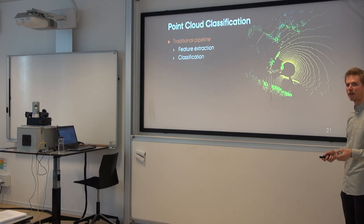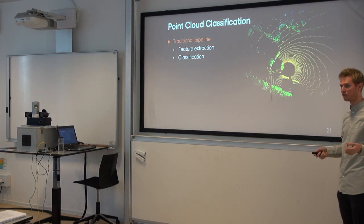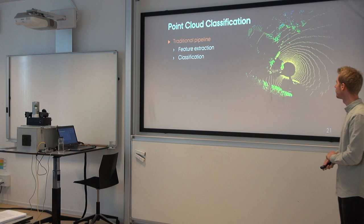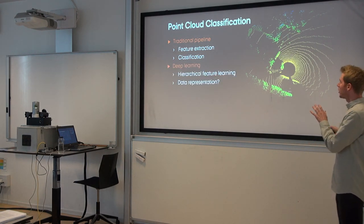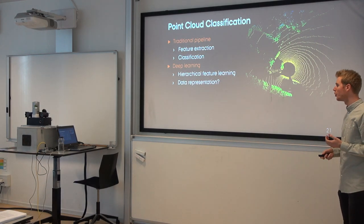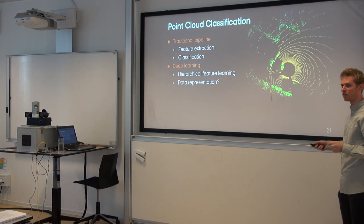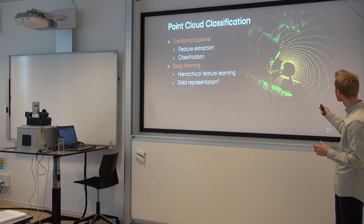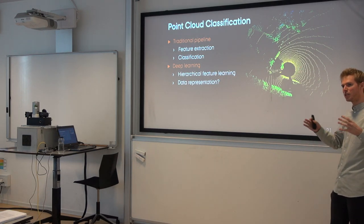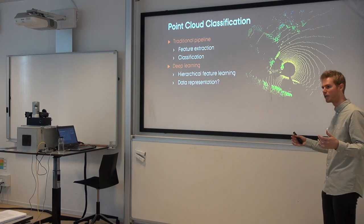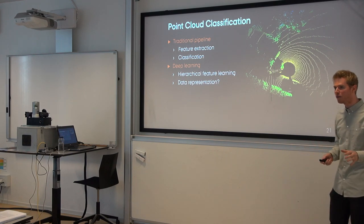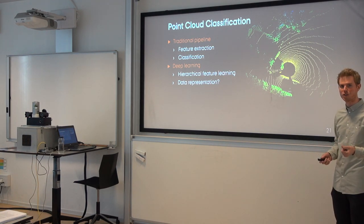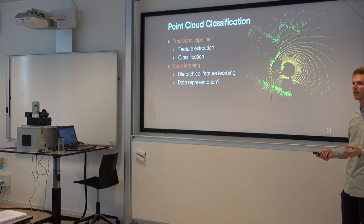This represents a very traditional pipeline for point classification: extract handcrafted features and apply a classifier to predict the class for each point. Another recent trend is deep learning. The great thing about deep learning is that it learns the features itself without handcrafting, and it does this in a hierarchical fashion — gradually increasing the neighborhood to incorporate multiple levels of features. This works really well for images; a few years ago the best deep learning networks surpassed human performance for object recognition in images.